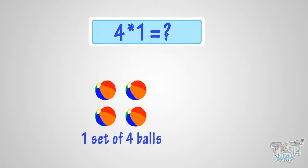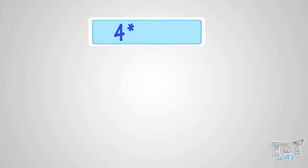What is four multiplied with one? It is the same as one set of four balls. So, it is four balls. That is, four multiplied by one is four.